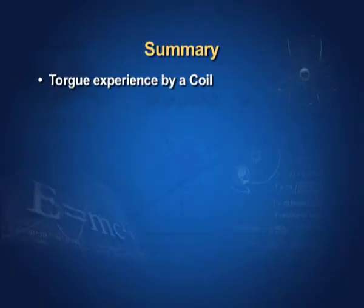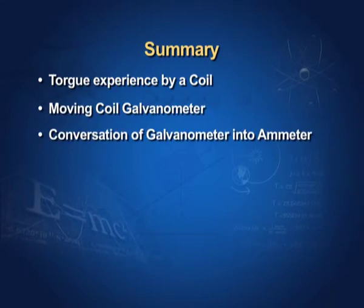Today in this session, we studied the torque experienced by a coil, the moving coil galvanometer, how to convert a galvanometer into an ammeter and voltmeter, and discussed two numericals. In the next chapter, we will study the magnetic properties of substances like diamagnetic, paramagnetic, and ferromagnetic substances, the hysteresis and applications of the hysteresis loop. That's all for today. Hope you enjoyed the session. Thank you.